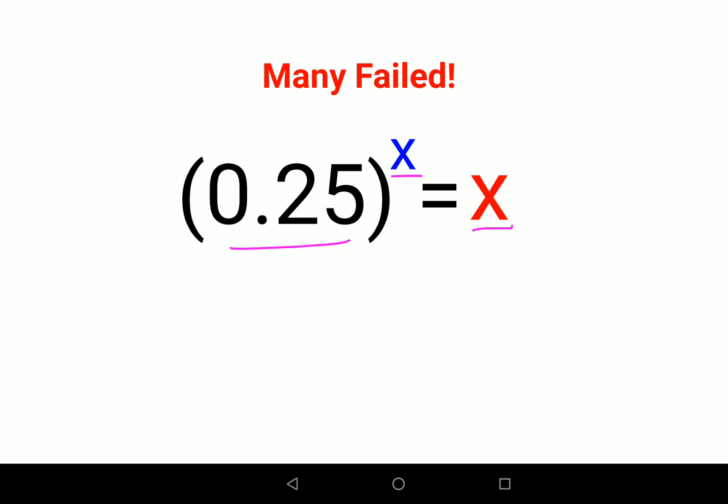Now when you have something like this, let me do this on another page. We have 0.25 the whole raised to x equals to x. When you have something like this, first we'll convert the decimal into a fraction. So this can be written as 25 upon 100 the whole raised to x equals to x.